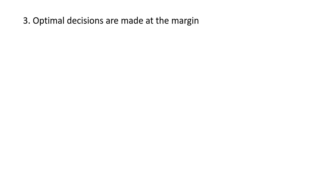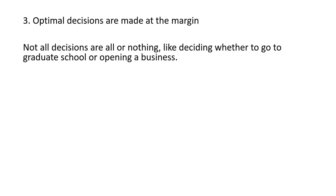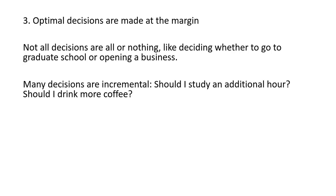And finally, principle number three: optimal decisions are made at the margin. Not all decisions are all or nothing, like deciding whether to go to graduate school or opening a business. Many decisions are incremental — should I do a little bit more of this or a little bit more of that? Should I study an additional hour for an exam? Should I drink a little bit more coffee?